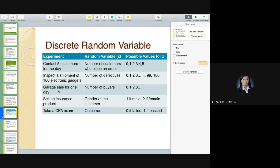Another experiment is the garage sale for one day. Such that your point of interest is the number of buyers that may come in or walk in. So, it could range from zero boundless. You don't know. Another experiment is to sell an insurance product. Such that you're interested in the gender of the customer. So, possible values of this gender variable is one, you may assign one for the male, two for the female, or you may assign 10 for the male. This is arbitrary. Whatever number you may assign, the important thing is it's mutually exclusive.